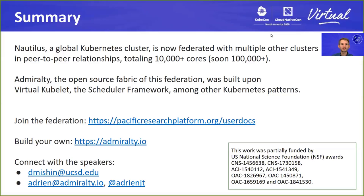In summary, it is possible to build a global Kubernetes cluster — you just need super fast networks and some custom-built nodes. But even then, Dmitry and his colleagues found reasons to use multiple clusters. The federation around Nautilus has over 10,000 cores currently and will soon be expanded by an order of magnitude with the addition of the Xpans supercomputer. The federation uses Admiralty, which itself uses Virtual Kubelet and the scheduler framework. If you're interested in joining the research platform around Nautilus, contact them. And if you want to build your own federation, check out Admiralty. Thank you.